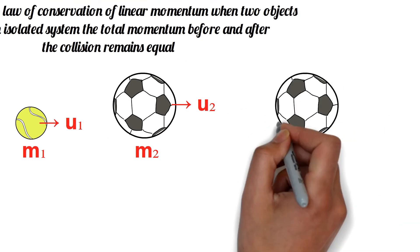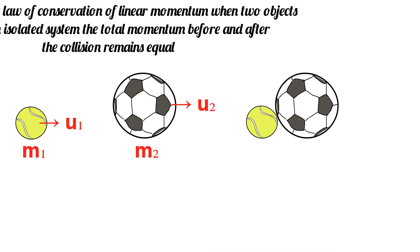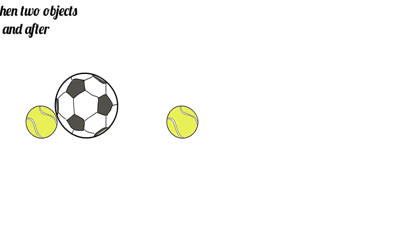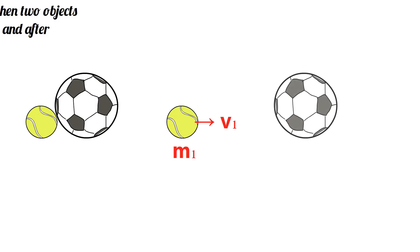Suppose they collide while moving in the same direction, for which the ball of mass M1 gains a velocity of V1, and the ball of mass M2 gains a velocity of V2.